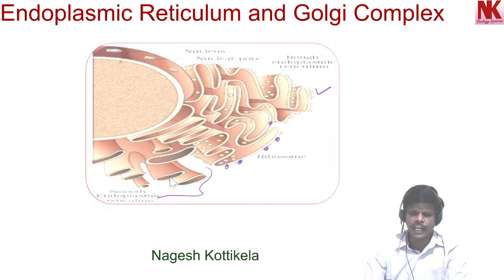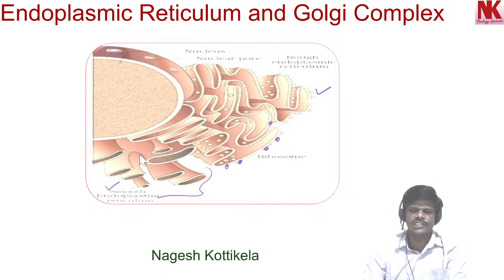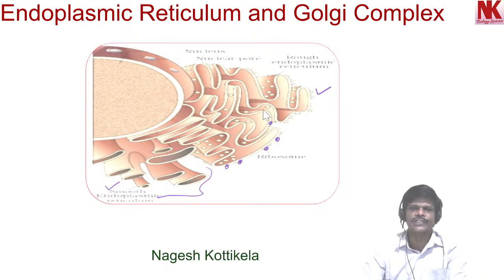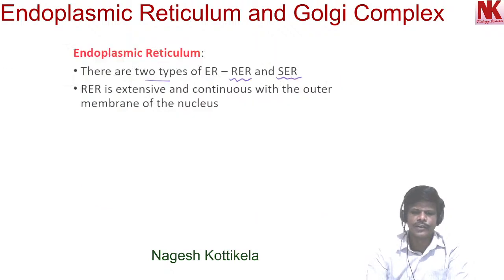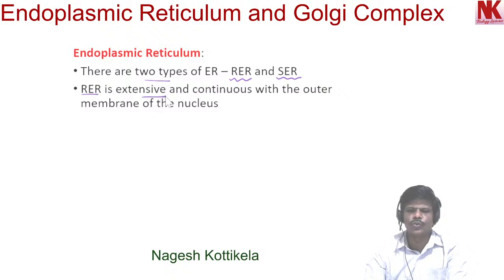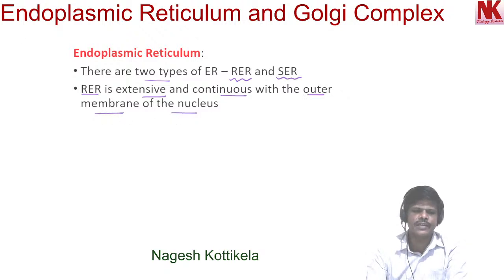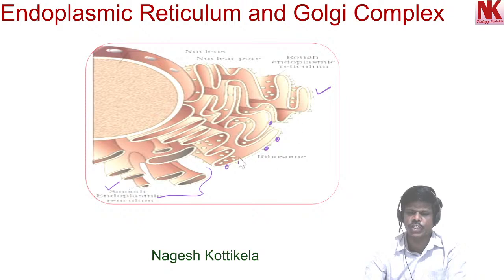Ribosomes are not attached to smooth endoplasmic reticulum. The structural difference is that rough endoplasmic reticulum has ribosomes on its surface, whereas smooth endoplasmic reticulum does not have ribosomes on its surface. Rough endoplasmic reticulum is extensive and continuous with the outer membrane of the nucleus. You can see in this picture it is extensive when compared with smooth endoplasmic reticulum.